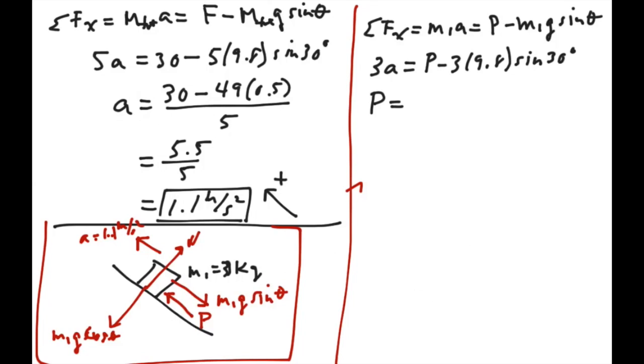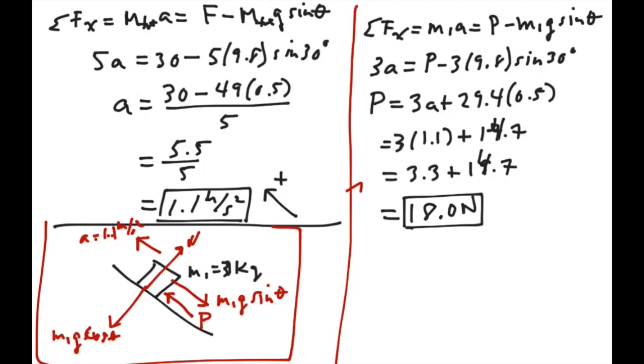So P is going to equal 3A plus 29.4 sine of 30 degrees is 0.5. So this is going to be 3 times 1.1 plus 19.7. So 3.3 plus 19.7. Is that right? Let's see. 29.4, oh no, that's 14.7. 3.3 plus 14.7 is going to give us 18.0 newtons. So the force of block 2 pushing on block 1 is 18 newtons.